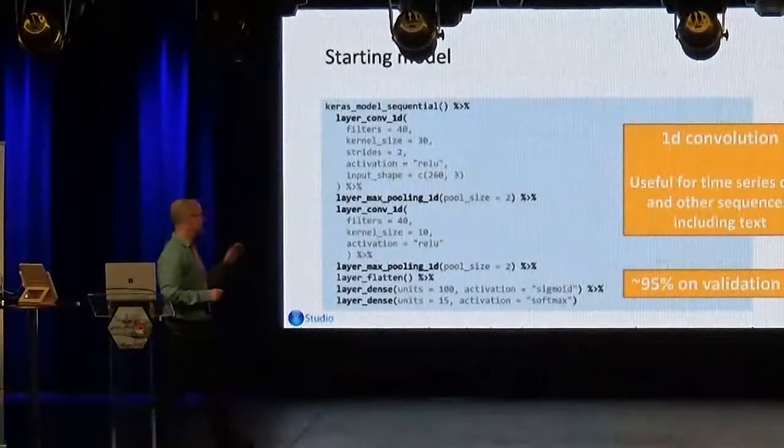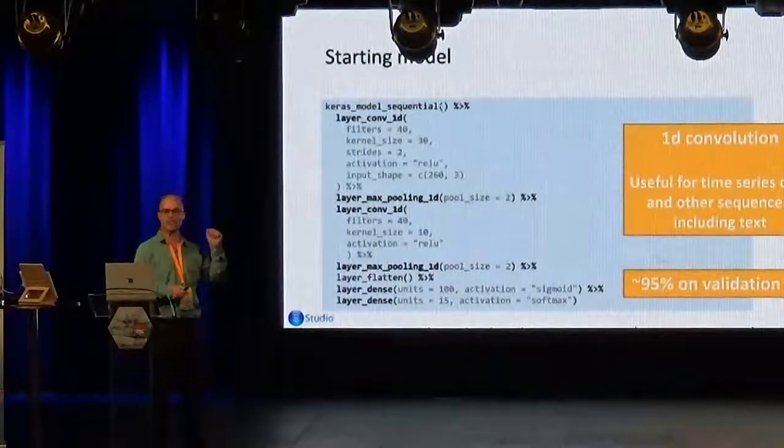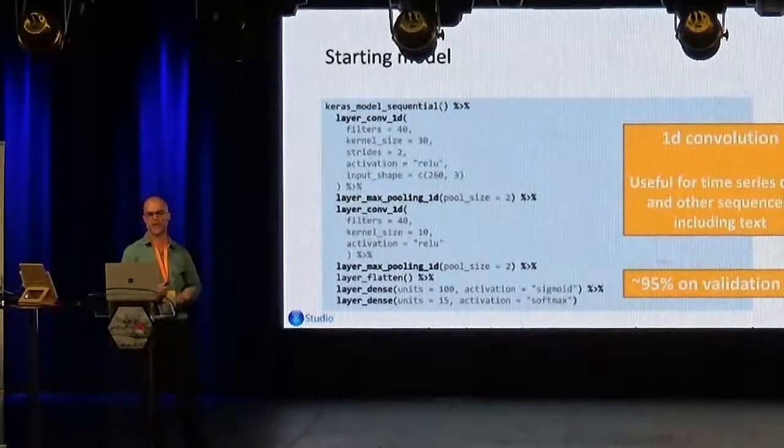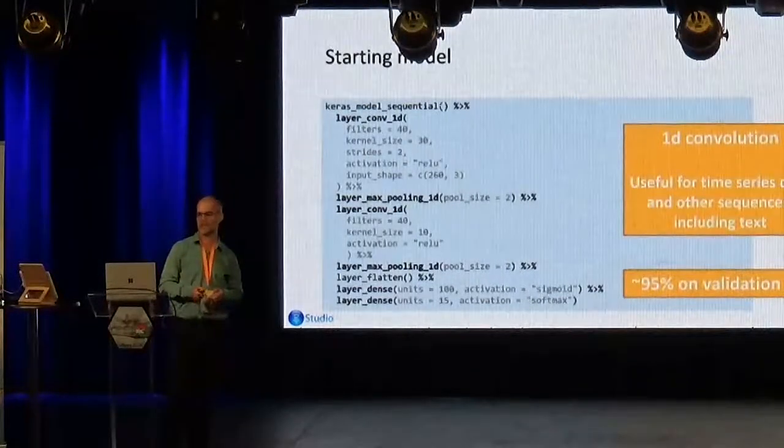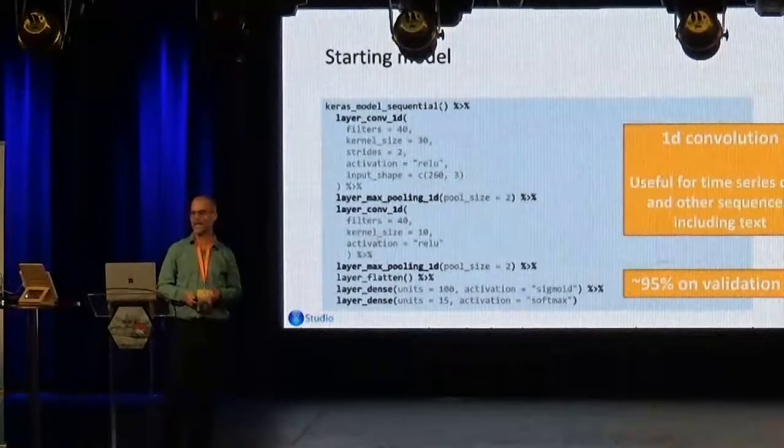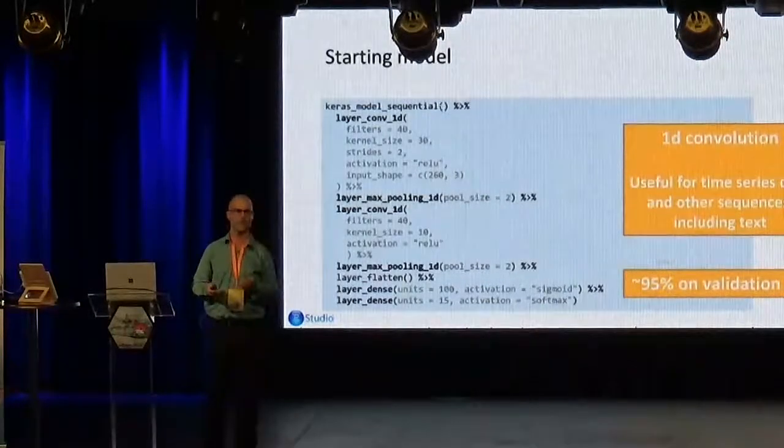1D convolution is really interesting because it's really applicable to any one-dimensional data, so any time series data, which will include text, any sequence that is sequential. So this model has two convolutional layers, each one of them followed by maximum pooling, and then two dense layers, two fully connected. And they get about 95% accuracy on their validation set, which is pretty awesome.